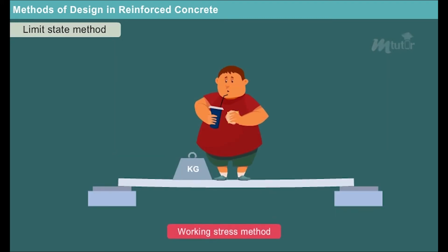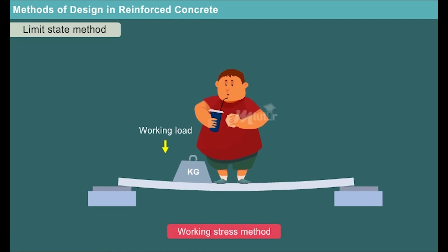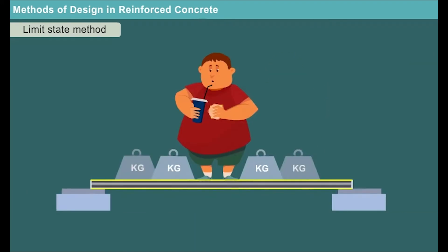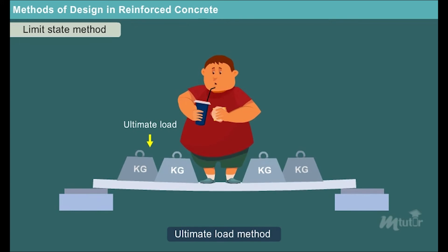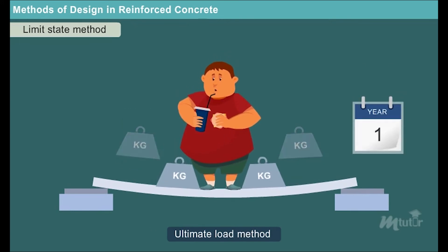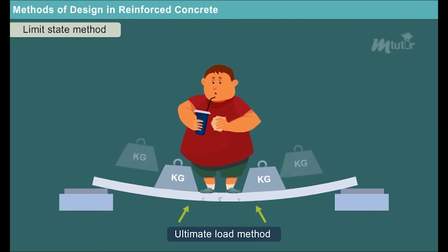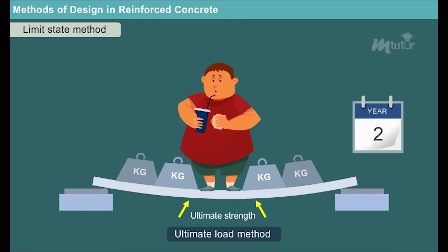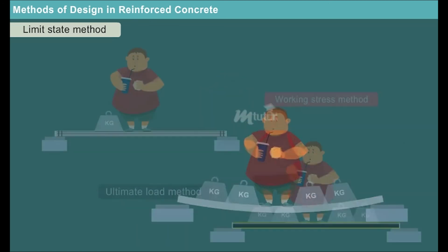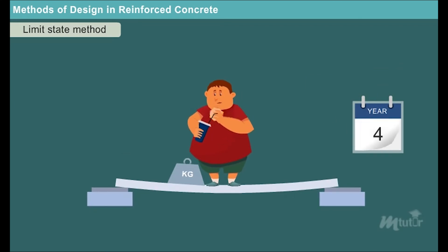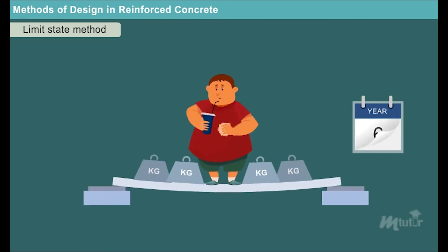Now let us discuss the third method, the limit state method, which was developed to overcome the discrepancies in the other two methods. The working stress method gives satisfactory performance at working load but is unrealistic at the ultimate state of collapse. Similarly, the ultimate load method ensures realistic assessment of safety but does not guarantee serviceability requirements under service load. An ideal method of design should not only consider the ultimate strength of a structure but also concentrate on the serviceability and durability requirements.